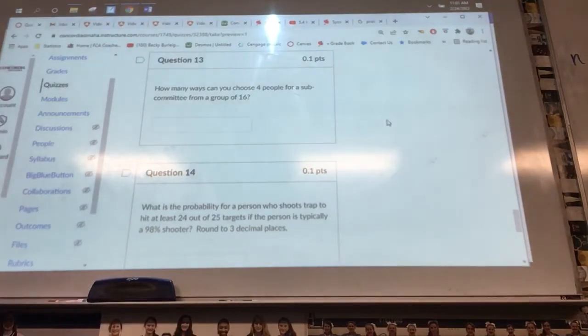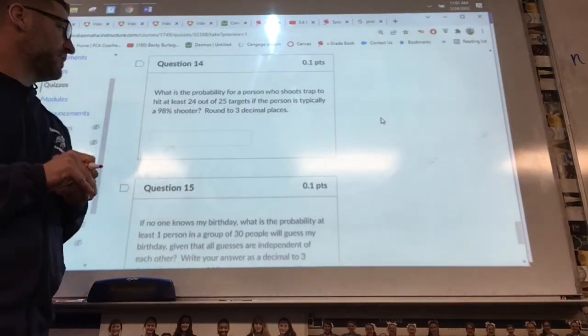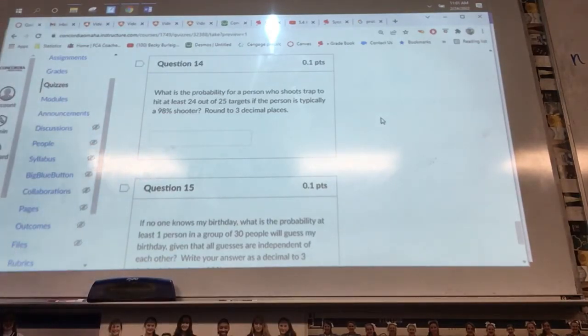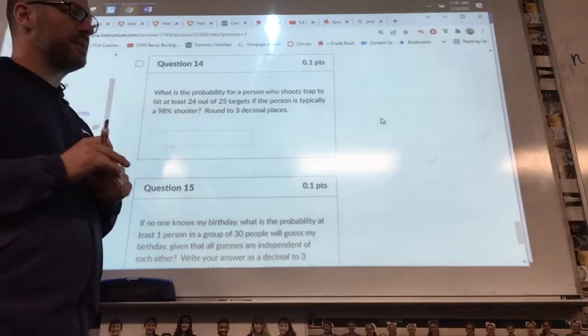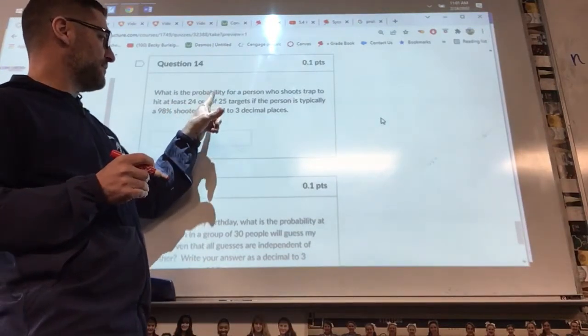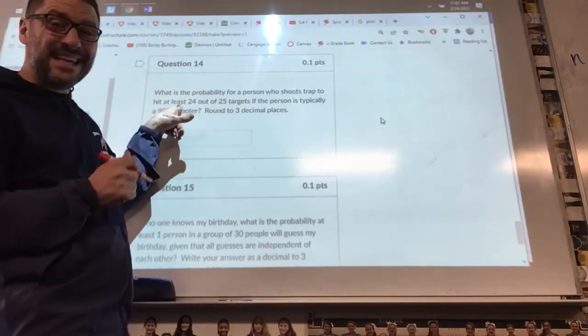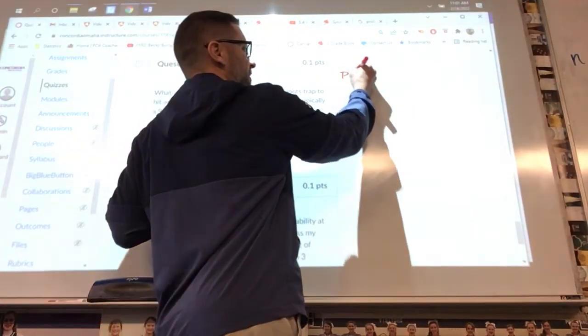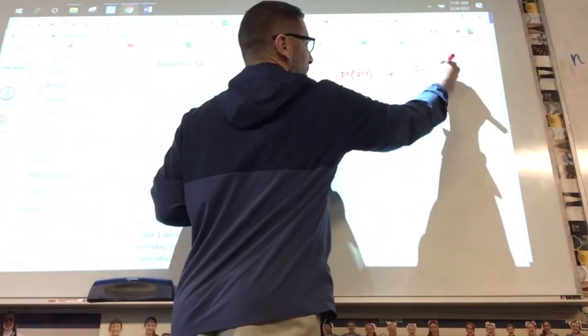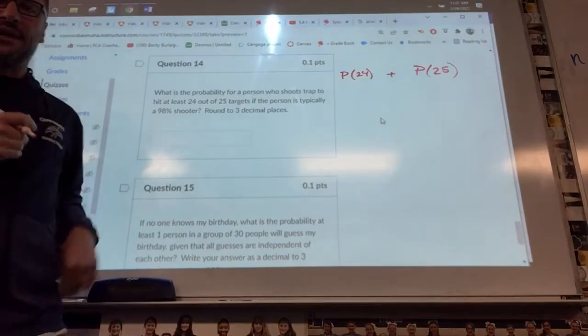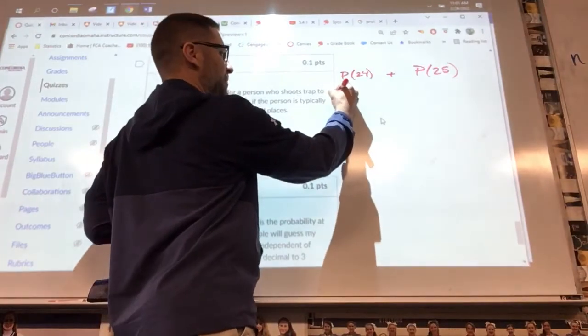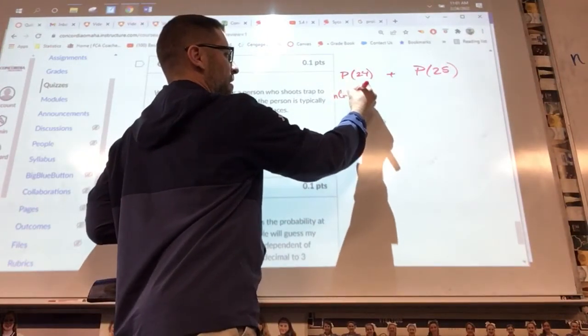Number fourteen: what's the probability for a person who shoots trap to hit at least 24 out of 25 targets if the person is typically a 98% shooter? Round to three decimal places. All right, so this is one of the harder ones. You want to get 24 out of 25. Hit at least. At least would mean I could find the probability that I hit 24, or 'or' would be plus, I can also find the probability that I hit 25. And what you have to do is you have to work out both independently and then add them together.